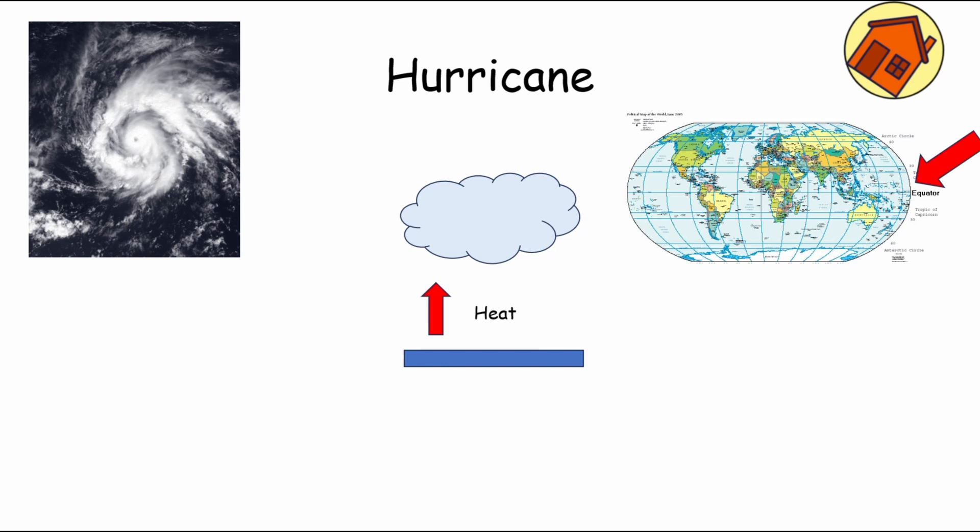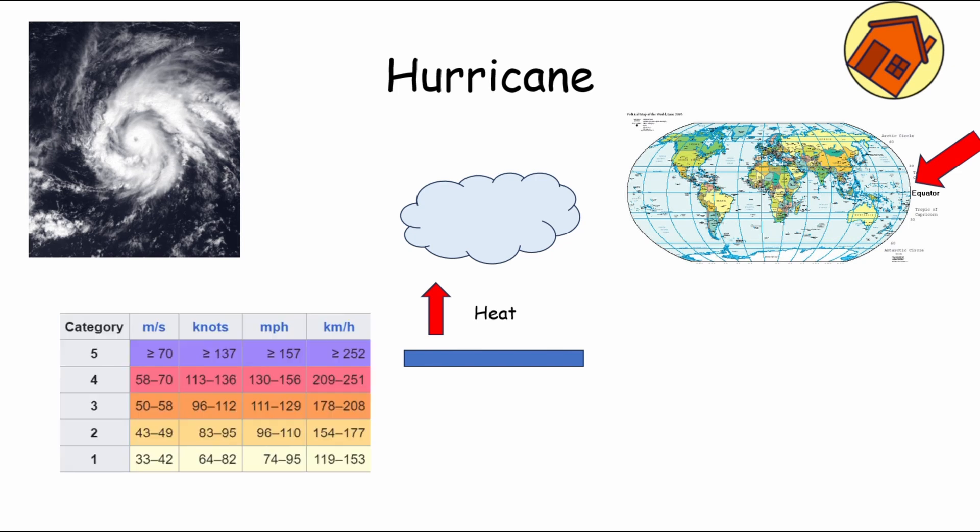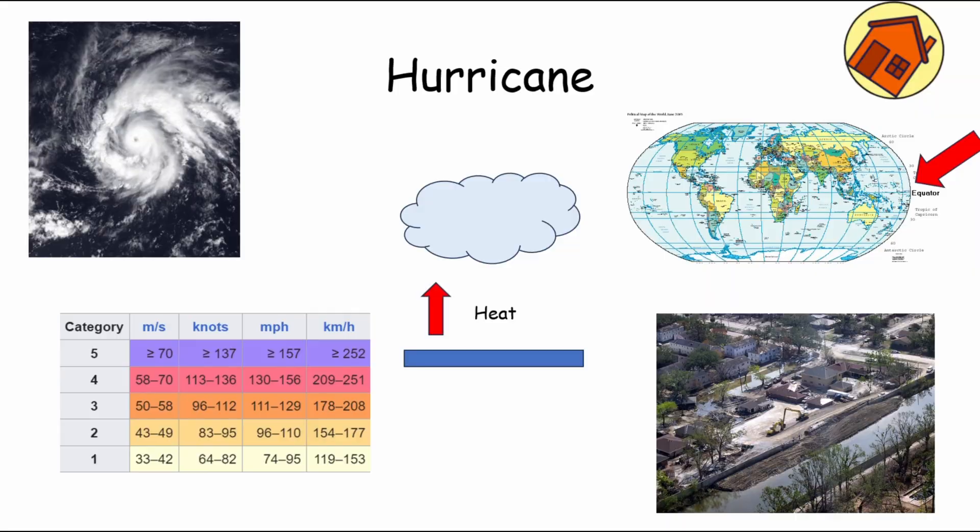With winds exceeding 74 mph, hurricanes are classified into four distinct categories, with Category 5 hurricanes being the most destructive. These storms pose significant threats to coastal areas, causing widespread devastation through storm surges, flooding, and high winds.